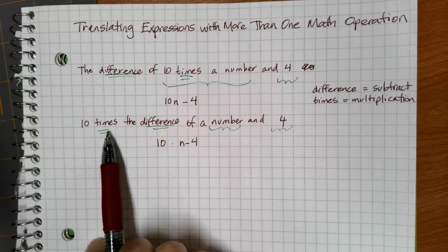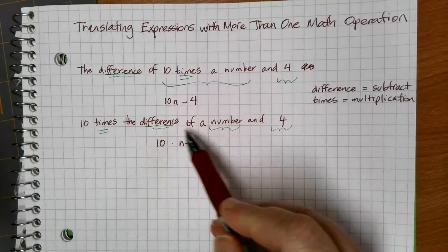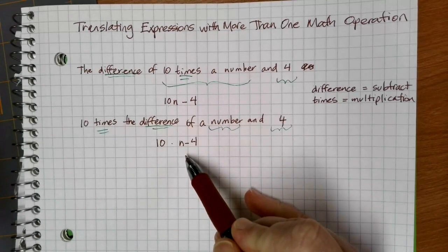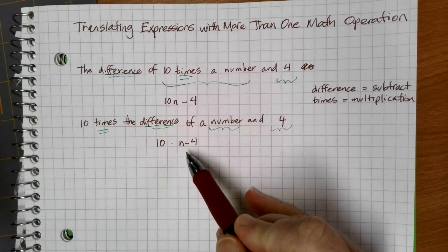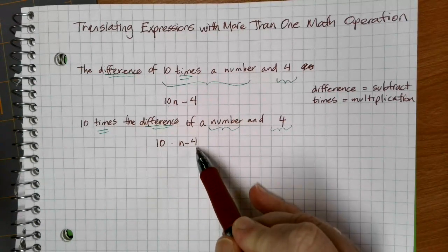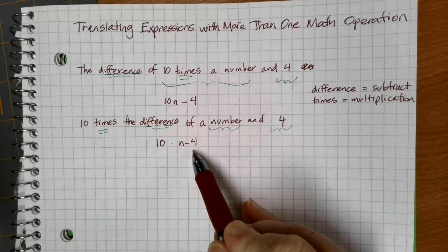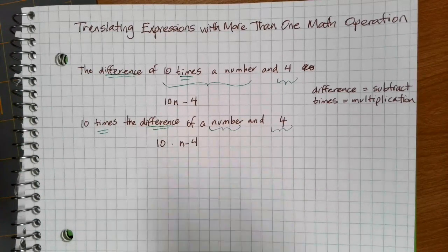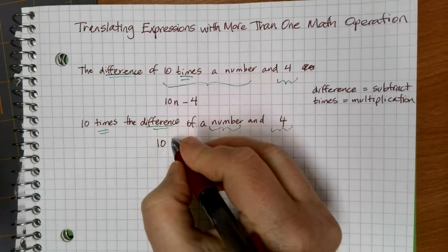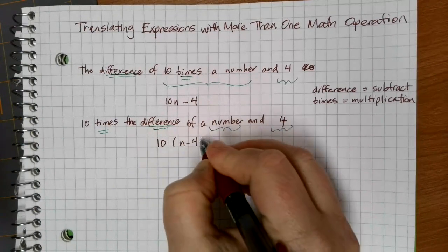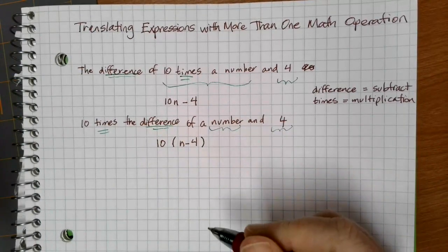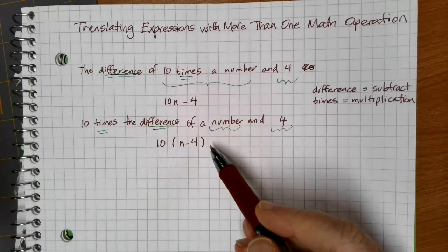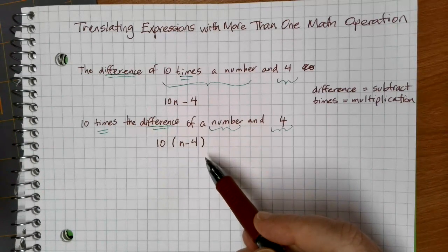Because I want to multiply by the difference, I need to multiply by the answer to the subtraction problem, which means I need to subtract first. According to order of operations, multiplication is done before subtraction, so written without parentheses is not going to be correct. I need to do the subtraction first, followed by the multiplication. The best way to deal with that is to use parentheses. Remember, parentheses are at the very top of our order of operations chain, so they will be done first.